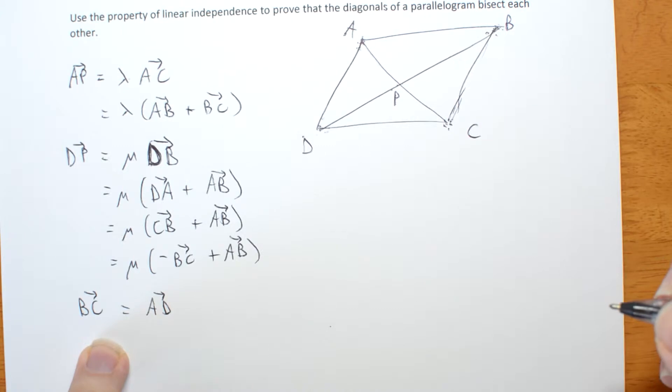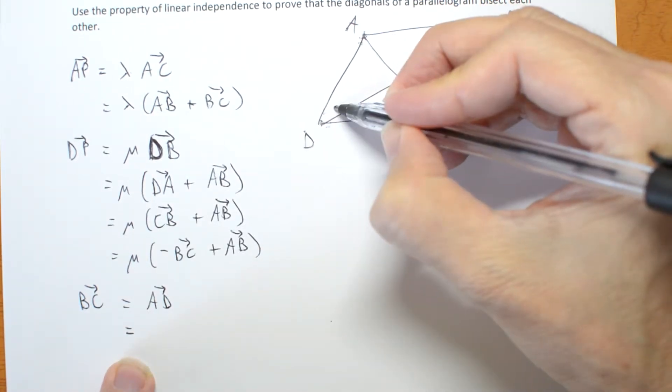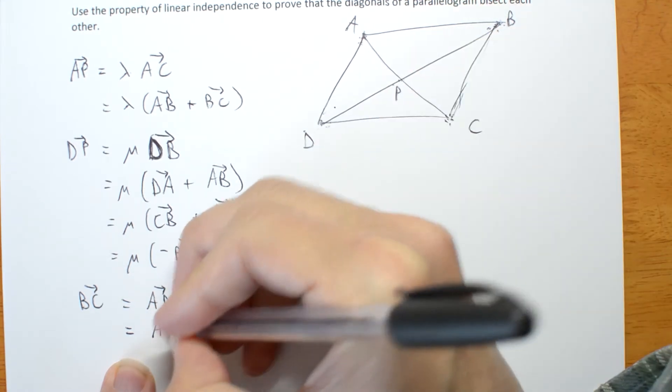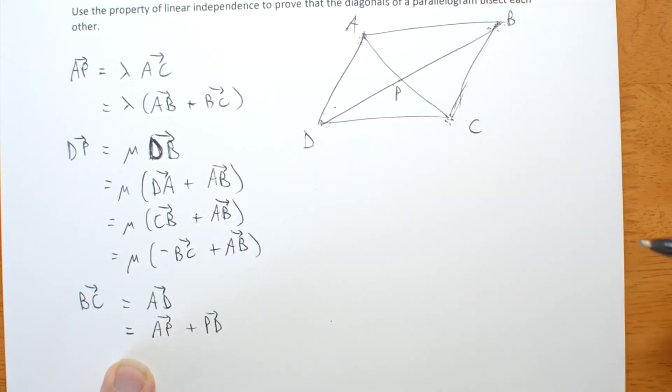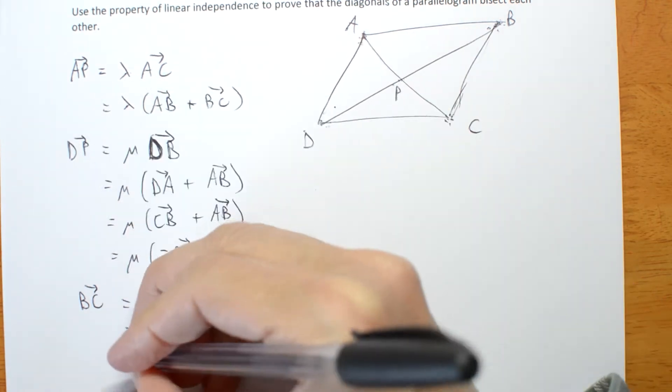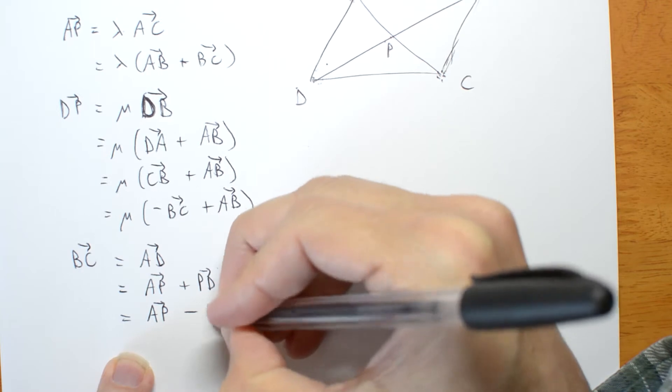The vector BC is the same as the vector AD because it's a parallelogram. But instead of going directly from A to D, I can go instead A to P, P to D. And PD is the negative of DP. AP minus DP.